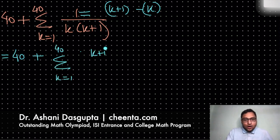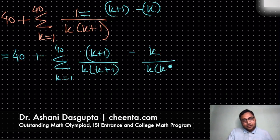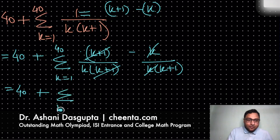(k+1) minus k, and the denominator will be same in both of these pieces. So we can cancel out the k here, cancel out the (k+1) here. So we have 40 plus summation of k equal to 1 to 40, 1 over k minus 1 over (k+1).